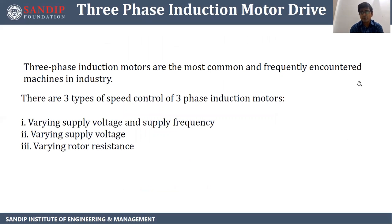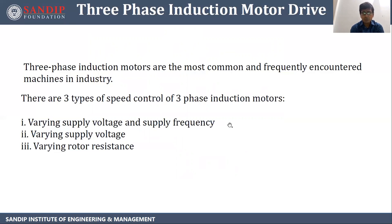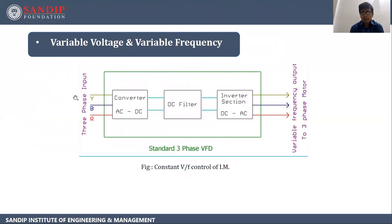Next is 3-phase induction motor drive. 3-phase induction motors are the most common and frequently encountered machines in industry. There are three types of speed control: first, varying supply voltage and supply frequency; second, varying supply voltage only; and third, varying rotor resistance. We are going to see varying supply voltage and supply frequency — how to control speed by varying supply voltage and supply frequency for a three-phase induction motor. Basically, we have to keep the V by F ratio, that is voltage by frequency ratio, constant.